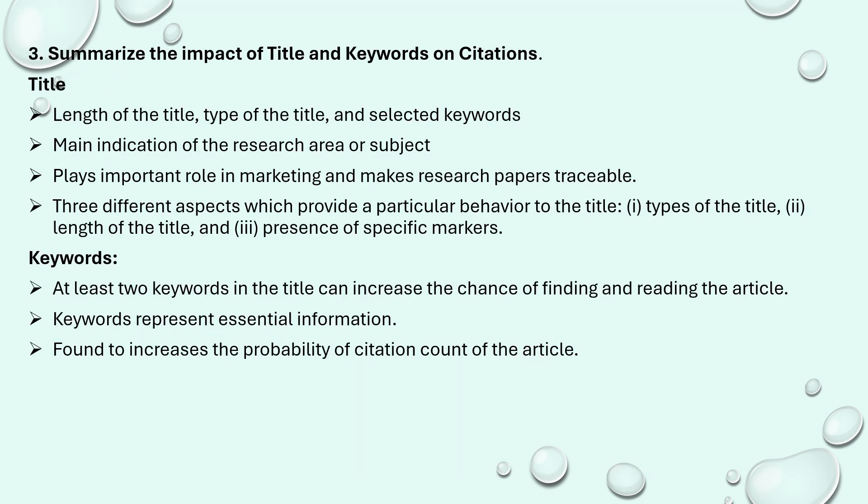Summarize the impact of title and keywords on citation. When you cite a paper, the title and keywords are the most important things that play an important role. The title determines its length and type, and the keywords are important because they determine under which topic or area the paper belongs. The title also plays an important role in marketing — for example, when you are developing a product based on blind people, 'a band for blind people' is the title you are going to market. There are three aspects of title behavior: the type of title — whether to include the methodology name or keep it precise — and the length of the title should always be appropriately long and precise.